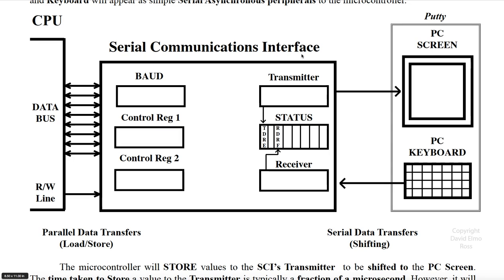The serial communications interface is a parallel-to-serial and serial-to-parallel I/O device. On this side we have parallel data transfers, which will be loads and stores, and on this side we'll be shifting from the PC keyboard to the receiver and shifting from the transmitter to the PC screen.